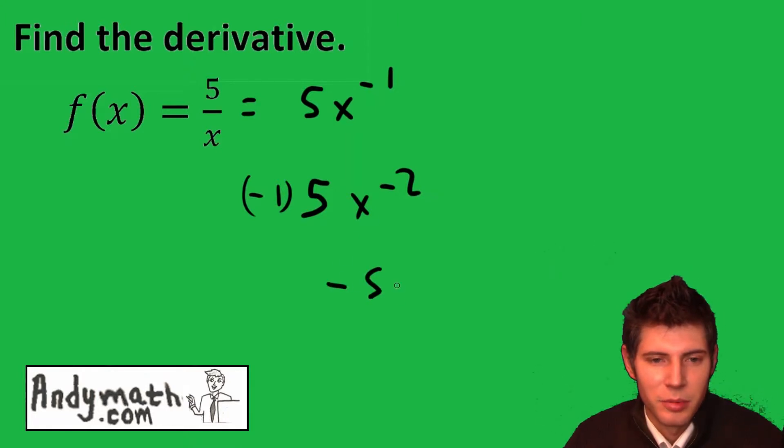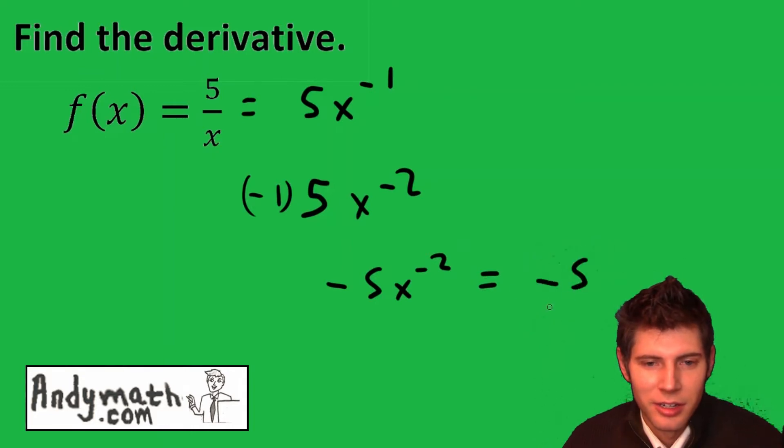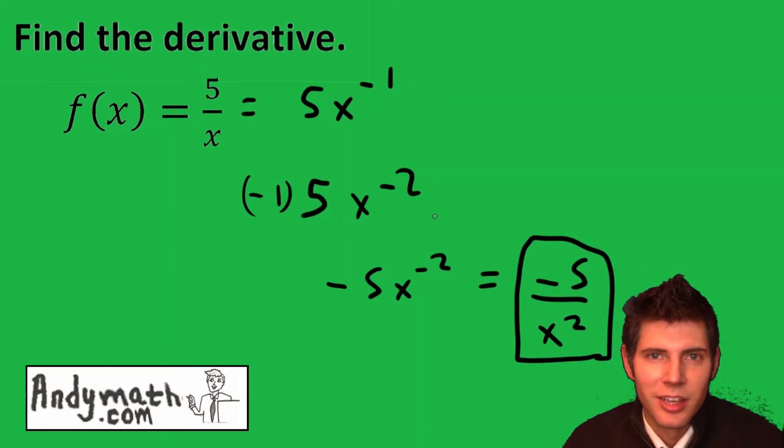So this simplifies to be negative 5x to the negative 2, which is equal to negative 5 over x squared. Either of these is the answer to the question.